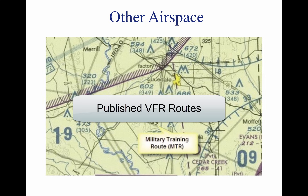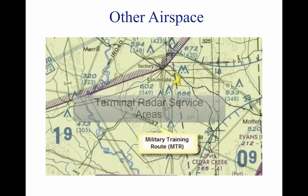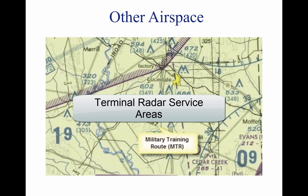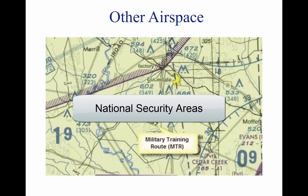Published VFR routes are VFR routes that transition under, around, or through complex airspace. Terminal radar service areas are areas that provide separation between all IFR operations and participating VFR aircraft. National security areas are defined airspace that provides increased security and safety of ground facilities.